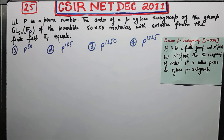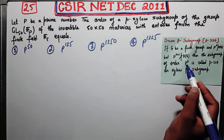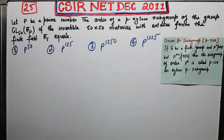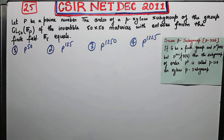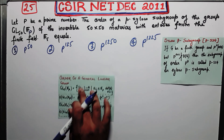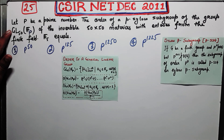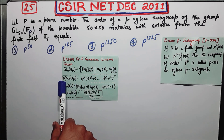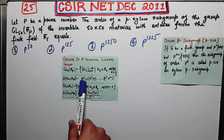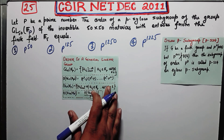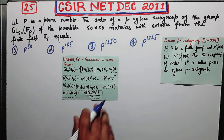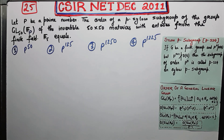To find the order of the P-Sylow subgroup, the first thing required is the order of the group. The group given is GL(50, F_P), so you need the order of GL(50, F_P). This group is known as the general linear group, and the formula for the order of GL(n, F_P) is given by the standard formula, where P is prime and n is a natural number.